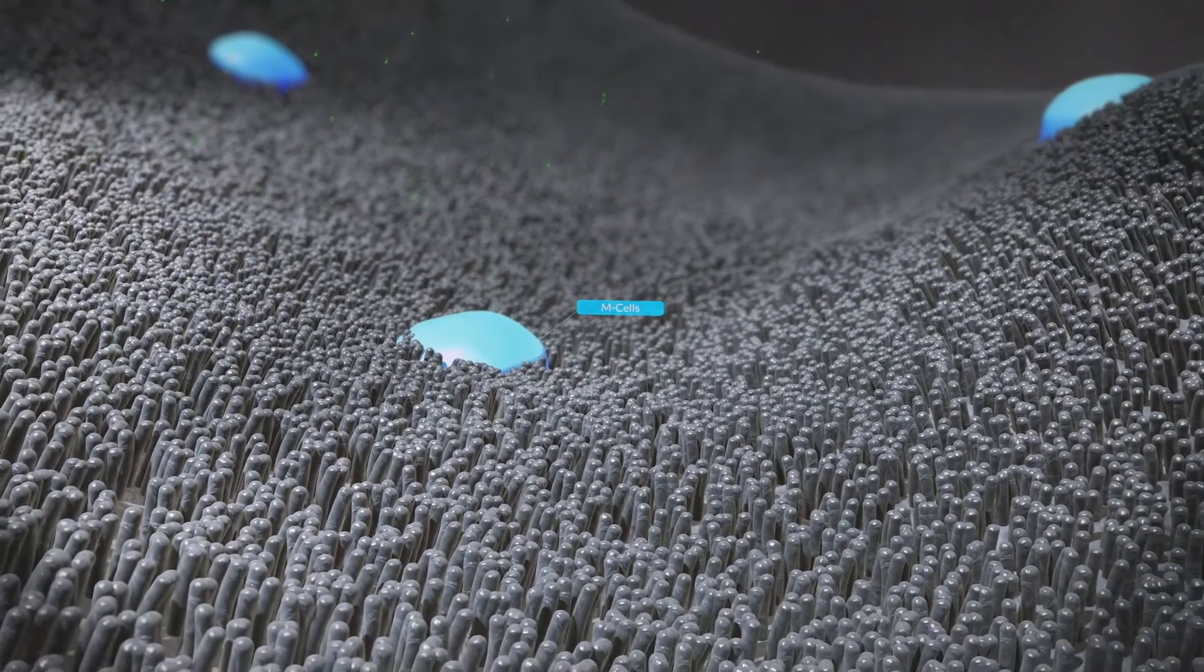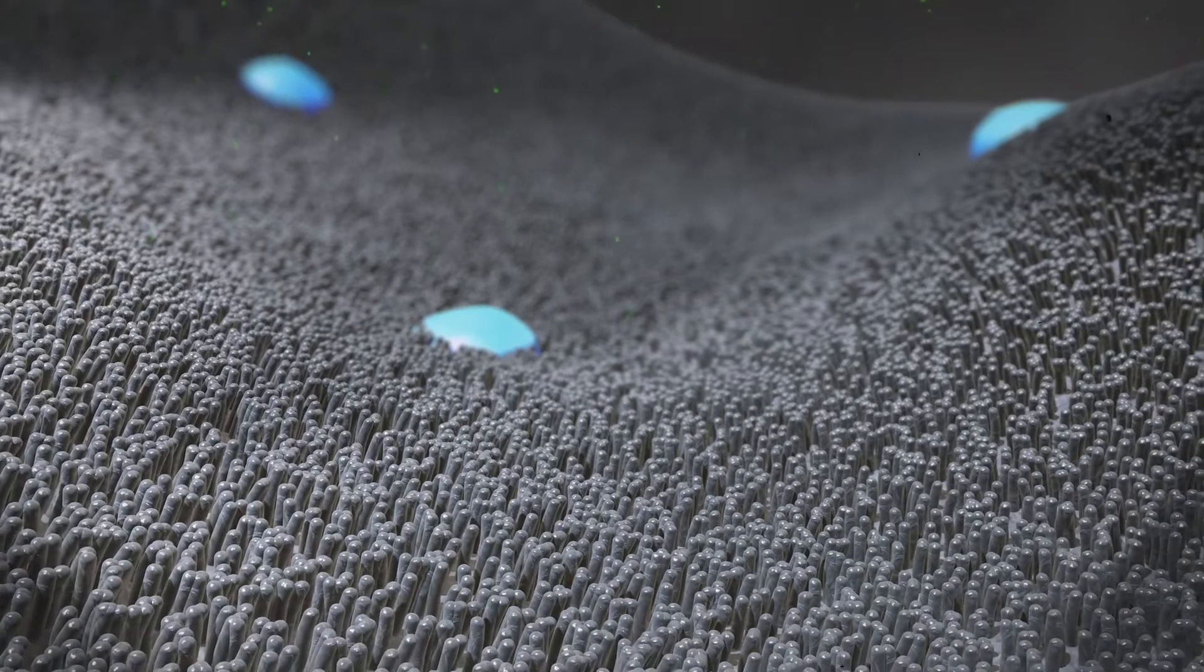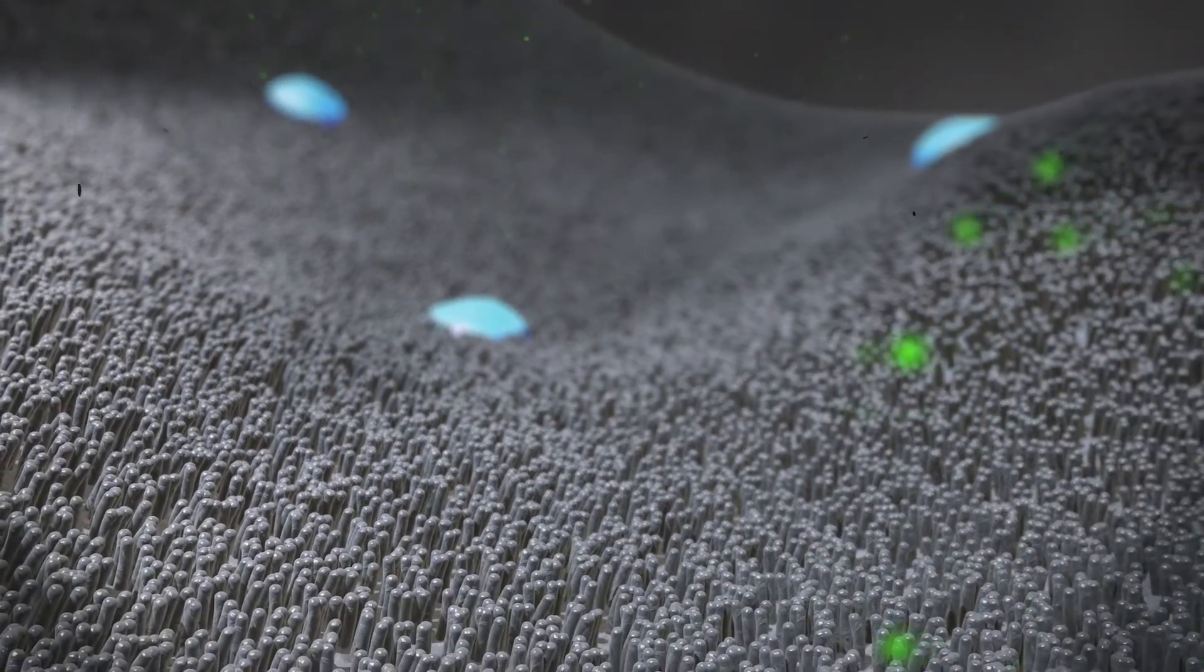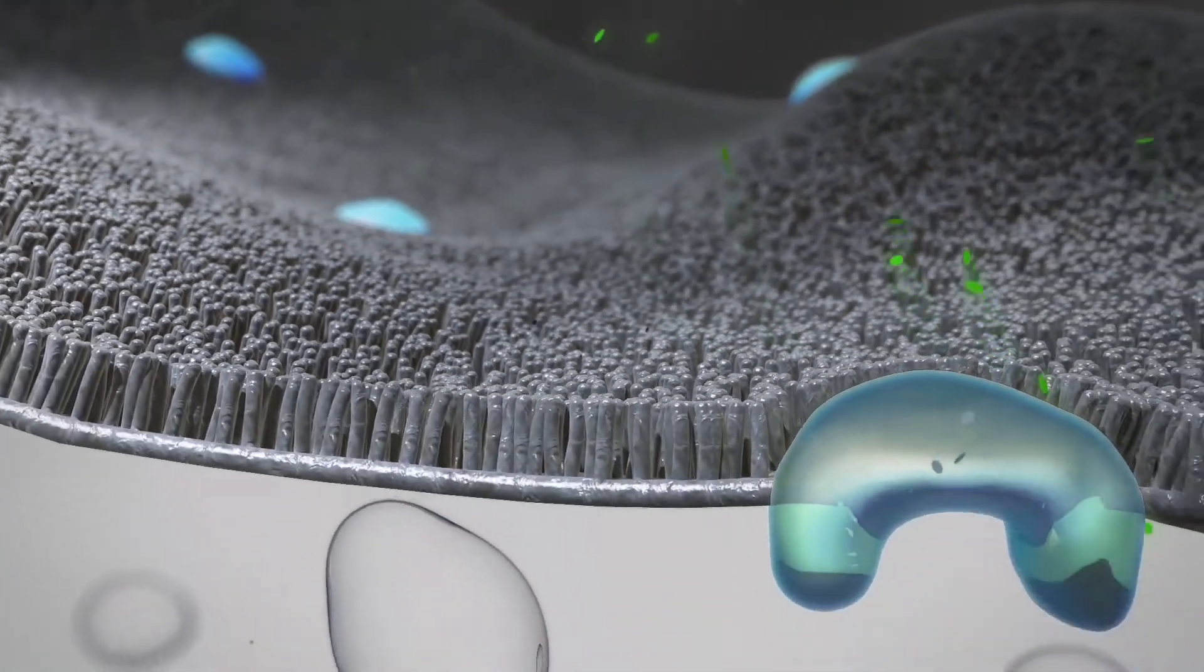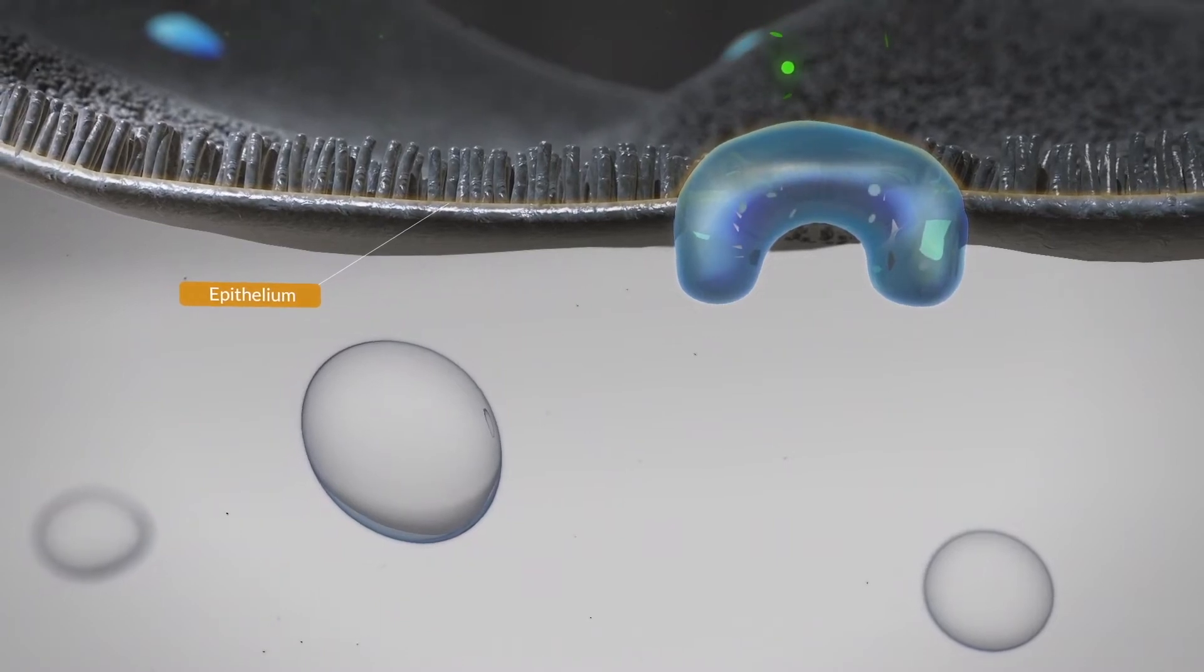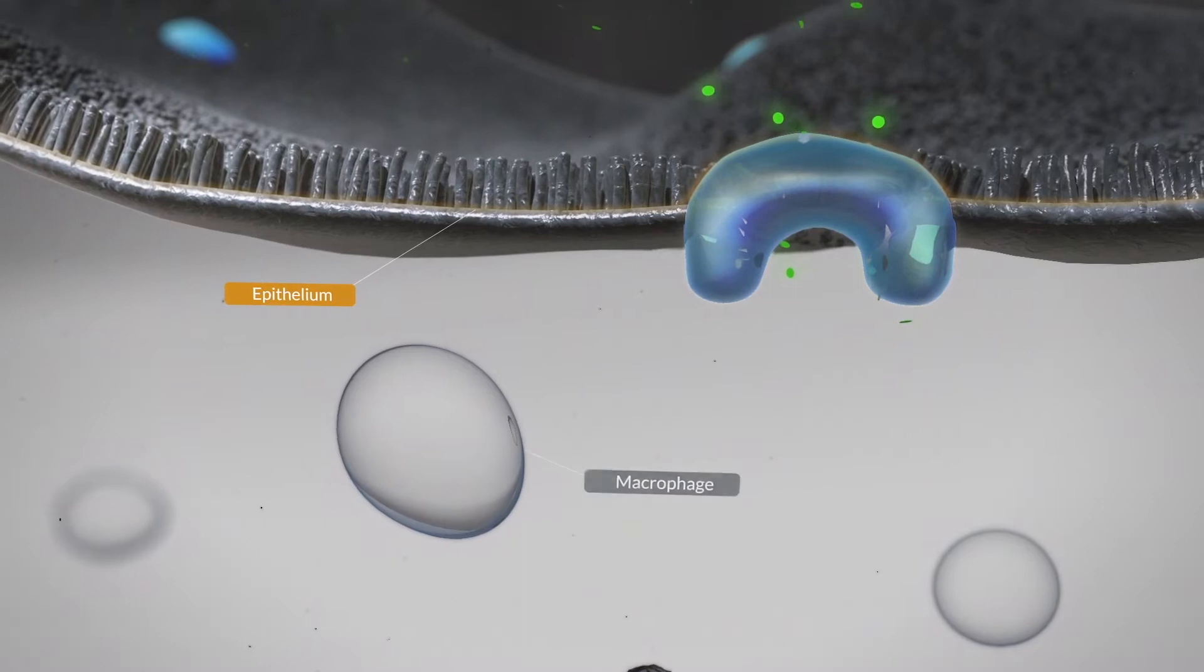Like viral particles and other antigens, beta-glucan can pass the natural barrier, the gut epithelium, through these M cells. On the reverse side of the gut lumen, the M cells present the beta-glucan particles to the gut-associated lymphoid tissue, which contains macrophages and other immune cells.